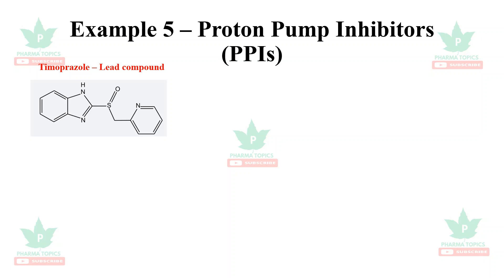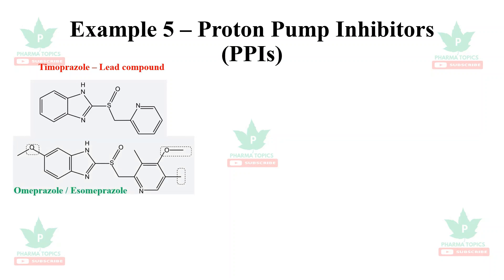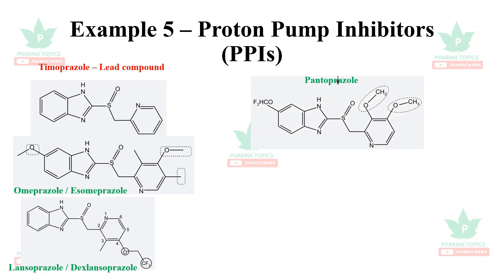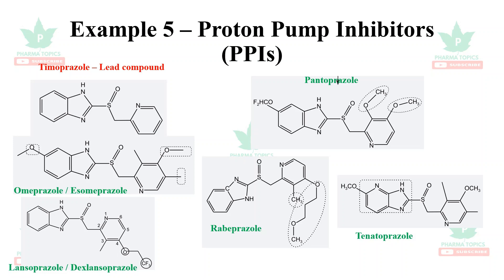A fifth cluster of examples involves proton pump inhibitors. Timoprazole was taken as the lead compound, from which omeprazole was derived. The R-isomer of omeprazole is esomeprazole. Further optimization yielded lansoprazole and dexlansoprazole. Additional modifications led to pantoprazole, which is also available as an IV formulation, and further to rabeprazole and tenatoprazole.